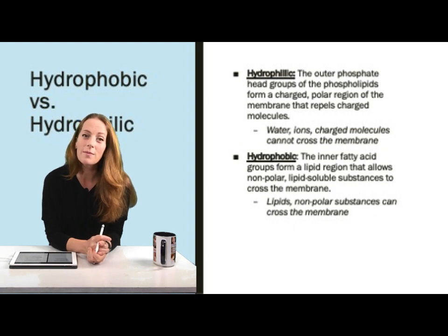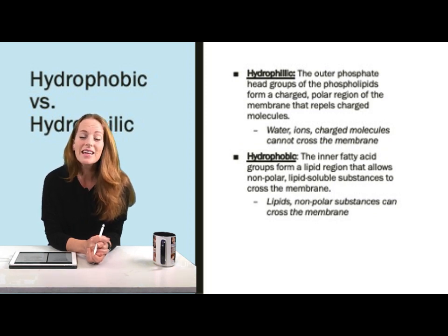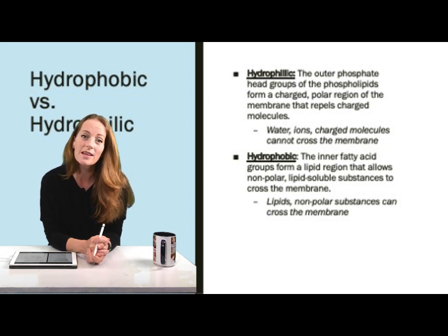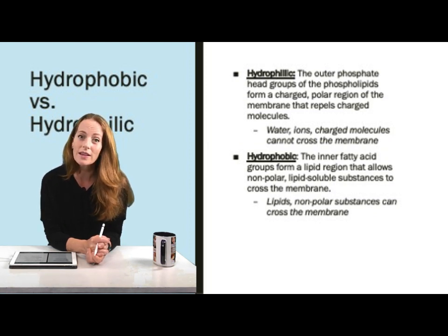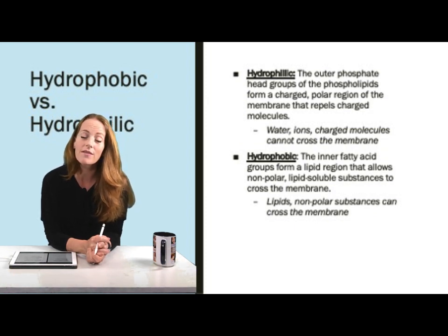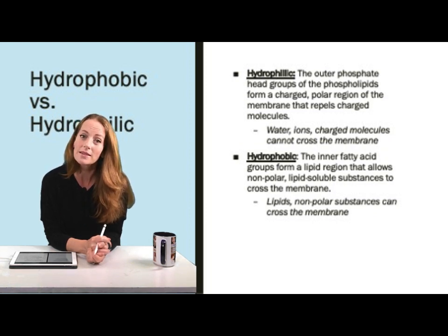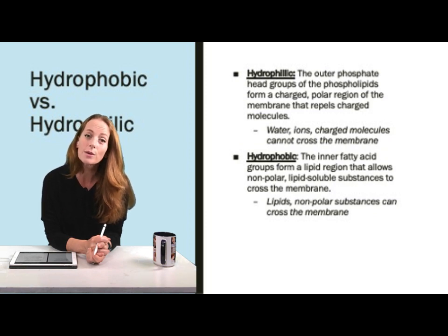The structure of the membrane, especially the phospholipids, is important for understanding why molecules can and cannot cross it. The phospholipids form hydrophilic and hydrophobic regions. The outer regions are the hydrophilic heads — the phosphate groups — which form polar regions that repel water and charged molecules. The inner layer is the large hydrophobic region, which is lipid-rich and allows only lipids to cross. Overall, the membrane repels charged or polar substances and allows lipid-soluble or nonpolar substances to cross.